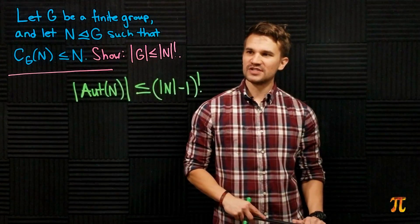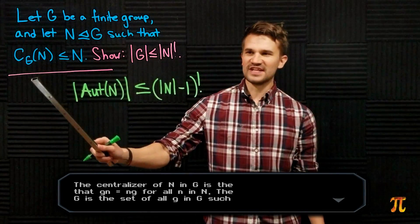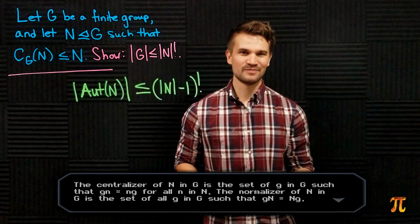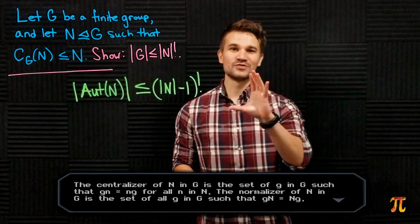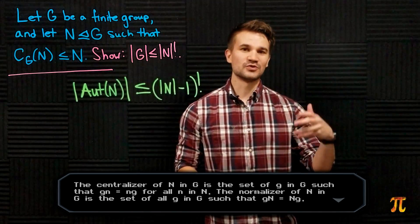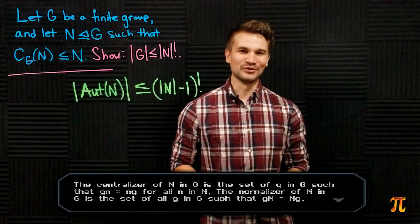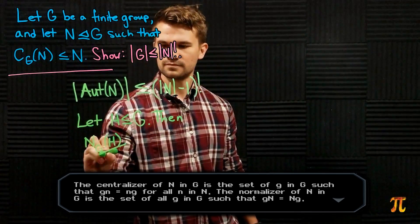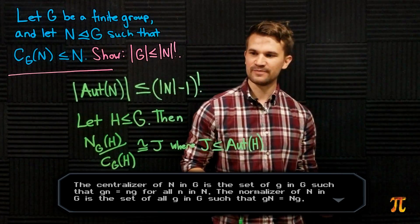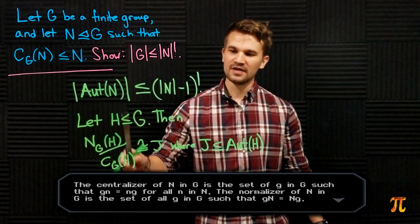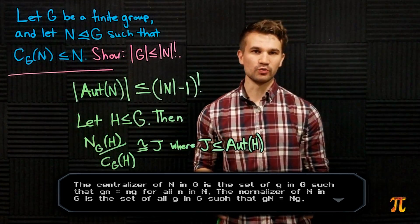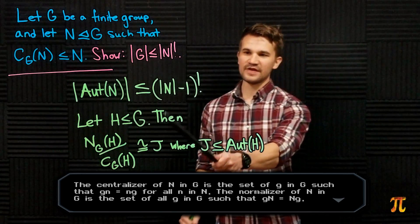Now I want to involve the centralizer. A very important result about normalizers and centralizers is: if H is a subgroup of a group G, then the normalizer of H in G quotiented by the centralizer of H in G is isomorphic to some subgroup of the automorphism group of H. So N_G(H) / C_G(H) ≅ J for some J ≤ Aut(H).